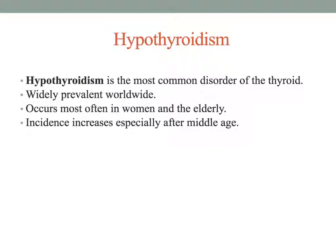In the United States, where iodine is usually adequate, autoimmune processes are the primary cause of thyroid disease. Hashimoto's thyroiditis, a type of primary hypothyroidism, is the most common form of autoimmune thyroid disease.